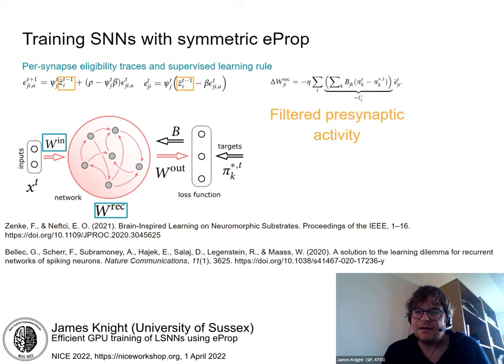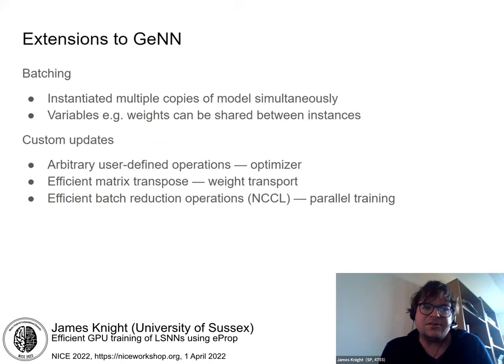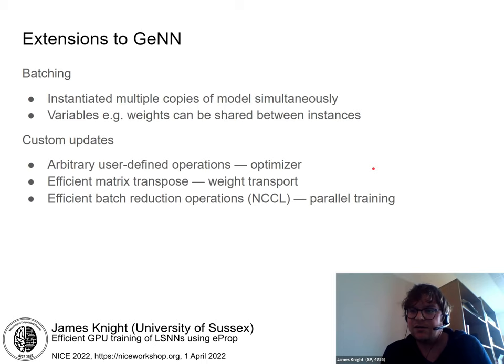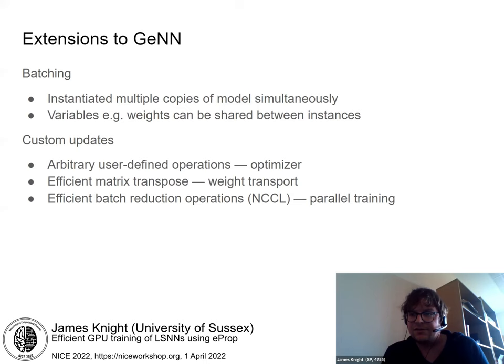To support this, we've added extensions to GeNN. You can now do batching in the style of common machine learning frameworks, instantiating multiple copies of the model and sharing weights between instances. We've also added a Swiss Army knife-like tool called Custom Updates, which lets you define arbitrary operations — we use these for implementing optimizers like Adam, for efficient matrix transpose operations to calculate the exact transpose for feedback weights, and for reductions to sum gradients across a batch and apply them to shared weights. This also extends across multiple GPUs.